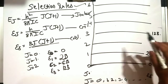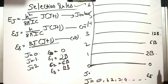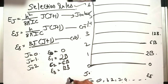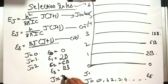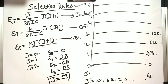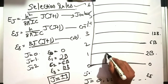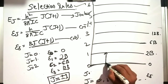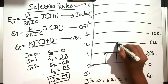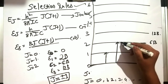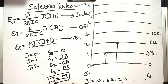There is one more important condition: the selection rule states that delta j equals plus or minus 1. This means molecules only jump from one energy level to the adjacent level — not skipping levels. This is the key condition: j equals plus or minus 1.